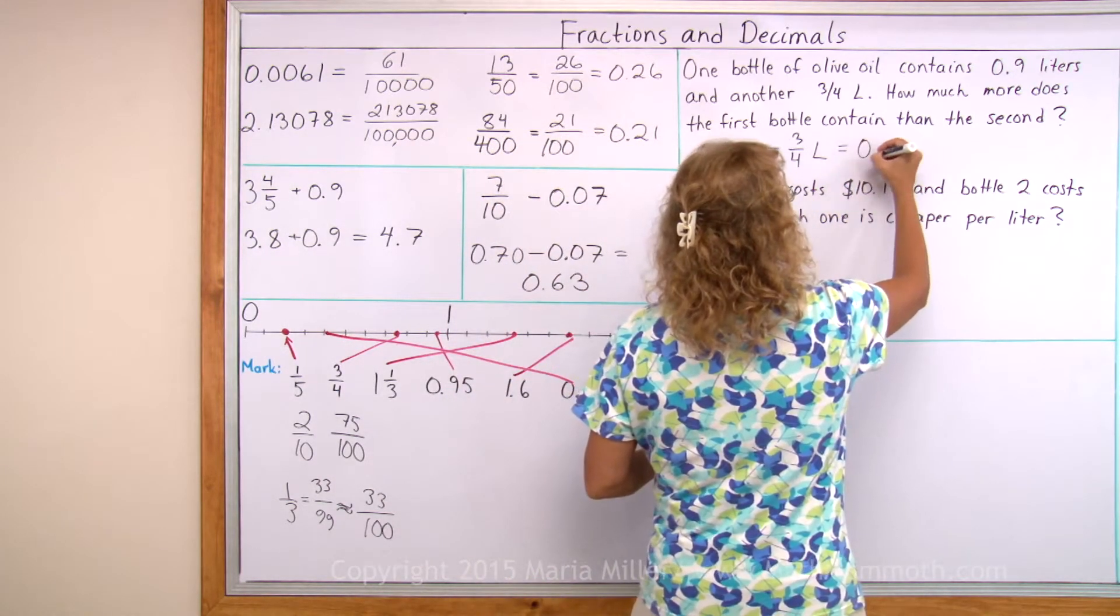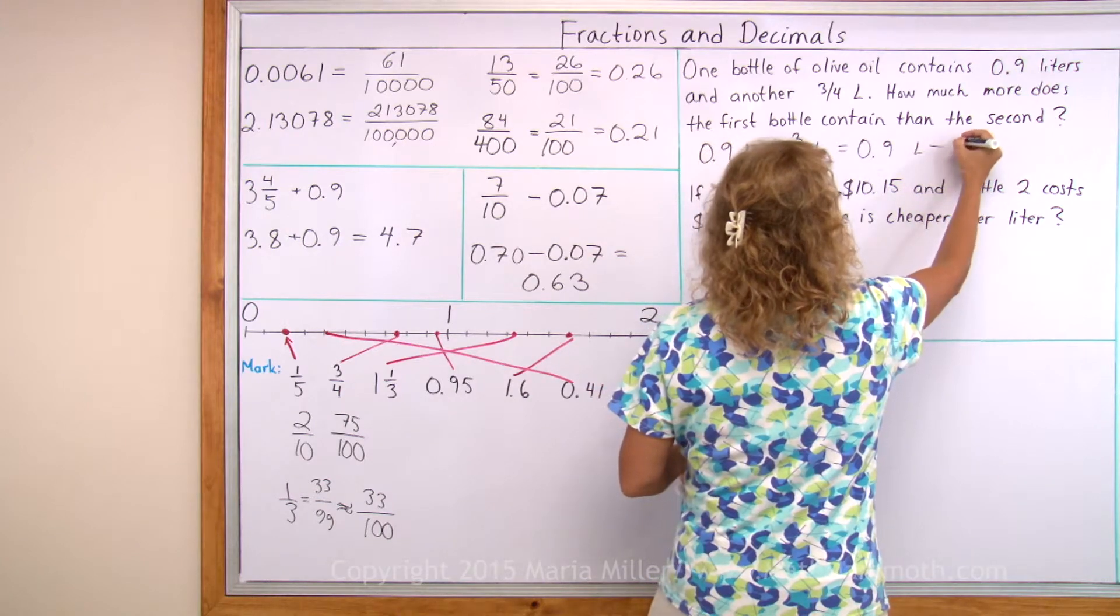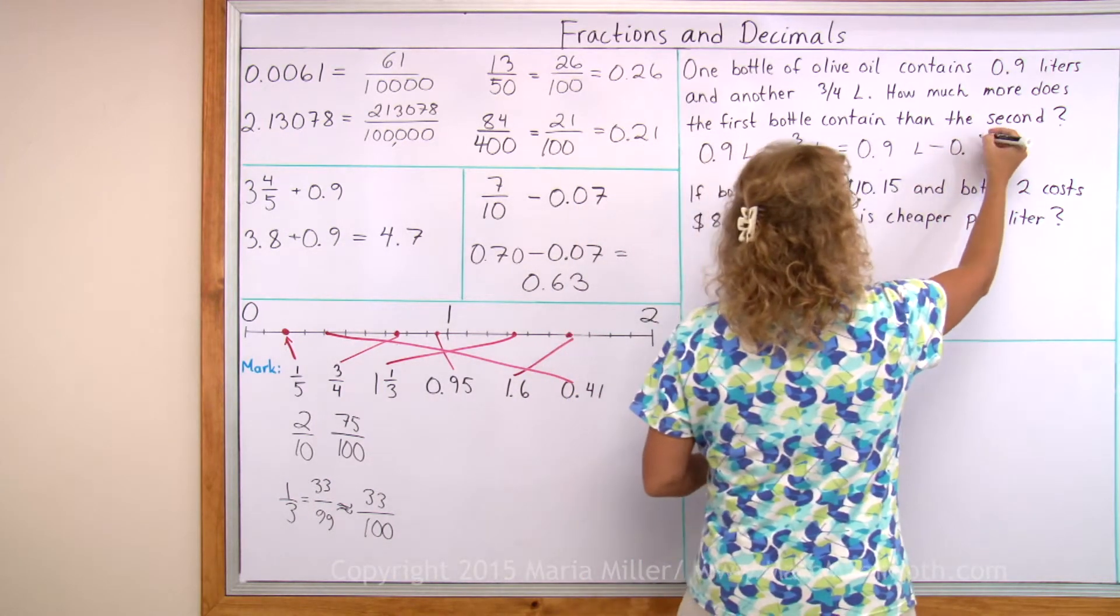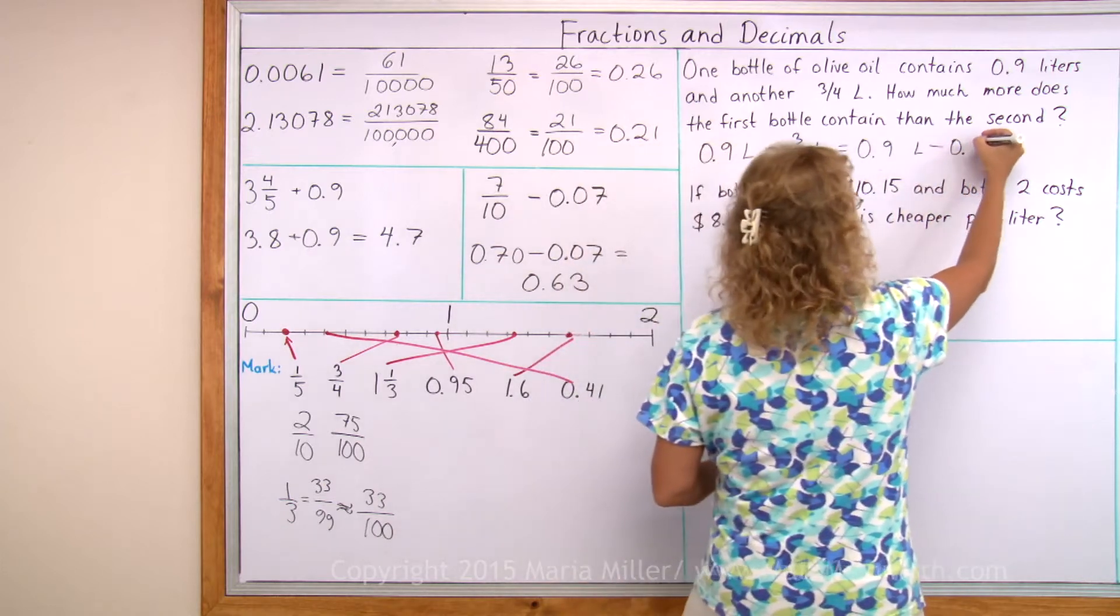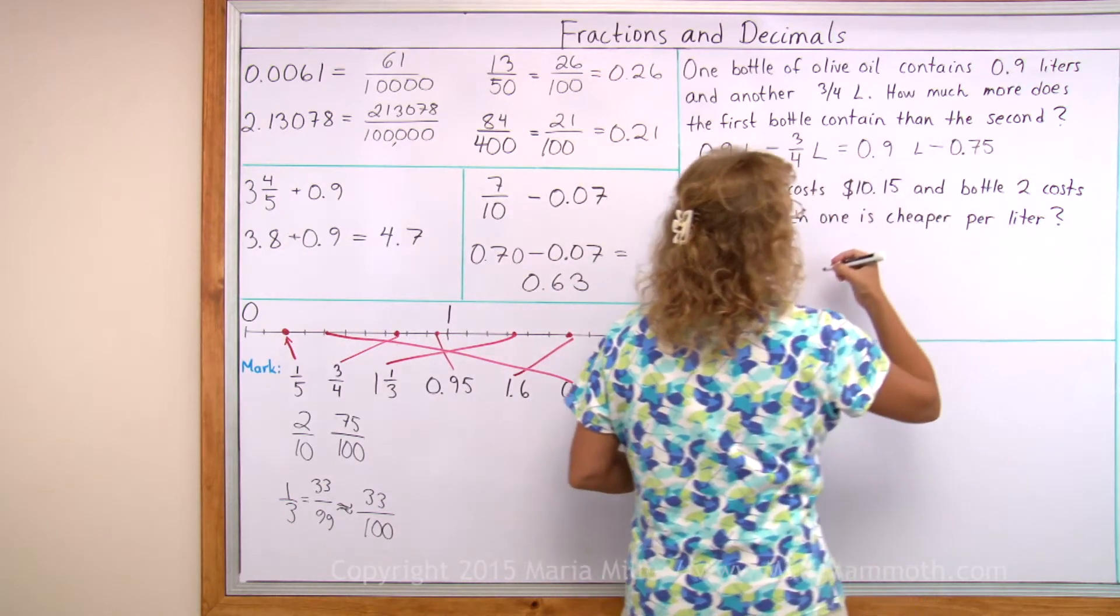So now I get 0.9 liters minus what? 3 fourths. It's like 3 quarters is 75 cents, so this is 0.75 liters.